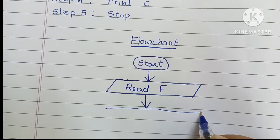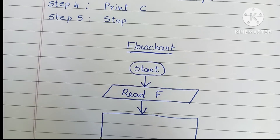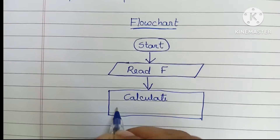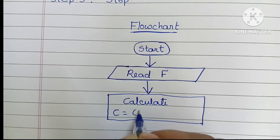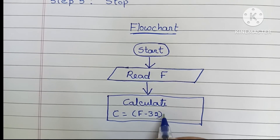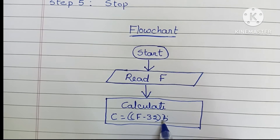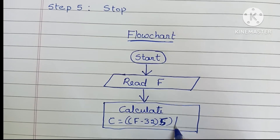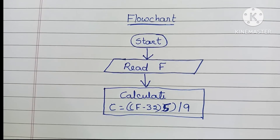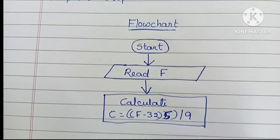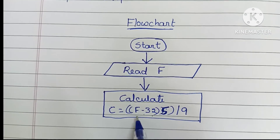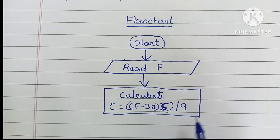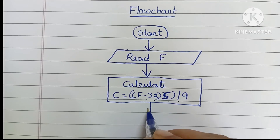Next, we have to calculate the result. We convert Fahrenheit to Celsius using the formula: C = (F - 32) × 5 / 9. Subtract 32 from F, multiply by 5, then divide by 9. This is written inside a process (rectangle) shape in the flowchart.